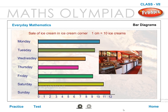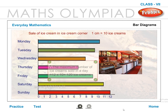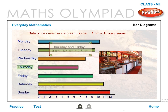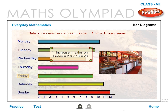Since 1 cm = 10 ice creams, the maximum number of ice creams sold in a day = 12 × 10 = 120 ice creams. On which day was the increase in sales the greatest? The difference in bar lengths is greatest between Thursday and Friday: 9 cm − 6.4 cm = 2.6 cm. The increase in sales is greatest on Friday. Therefore, increase in sales on Friday = 2.6 × 10 = 26 ice creams.